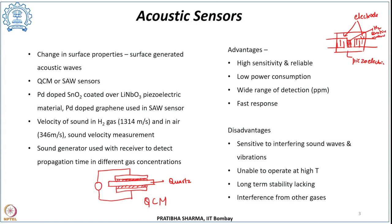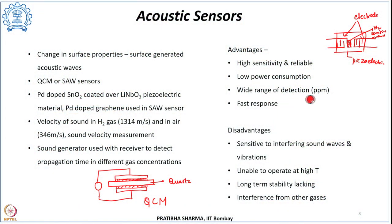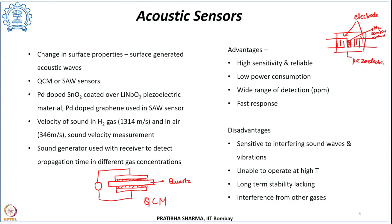Acoustic sensors have advantages of high sensitivity, reliability, low power consumption, and a wide detection range — even down to parts per million — with a faster response. However, they are sensitive to interfering sound waves and vibrations, so noise can be an issue. They are unable to operate at high temperatures, long-term stability is a major challenge, and interference from gases other than hydrogen can limit their use.